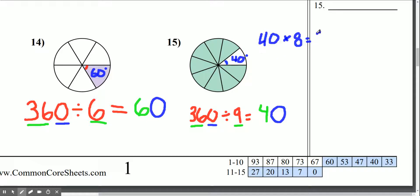And 4 times 8 is 32, and place the 0. So all these shaded pieces would equal 320 degrees. But each pie piece is 40 degrees.